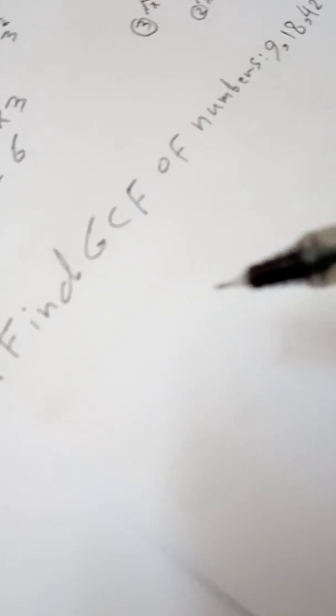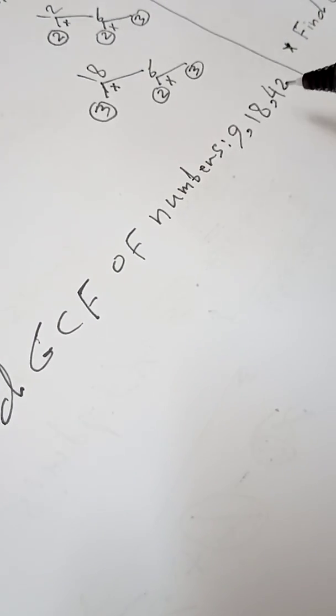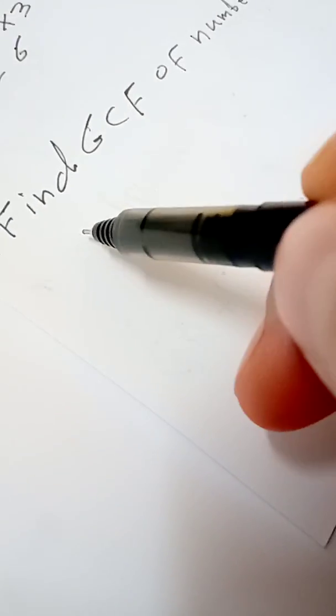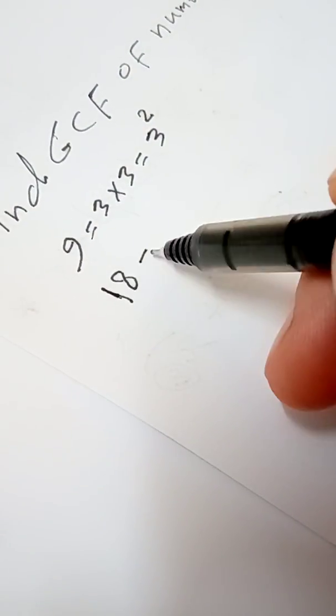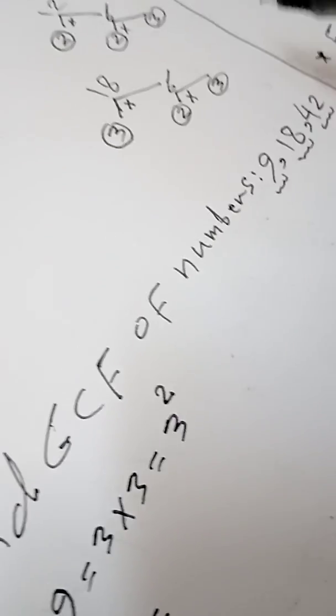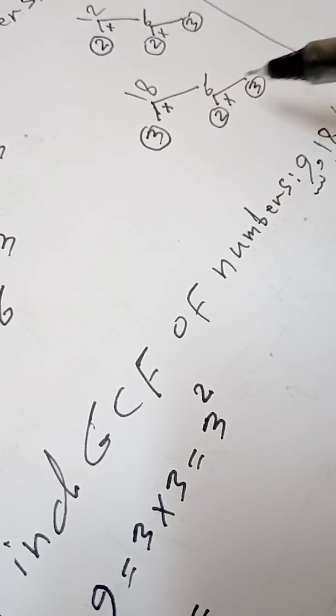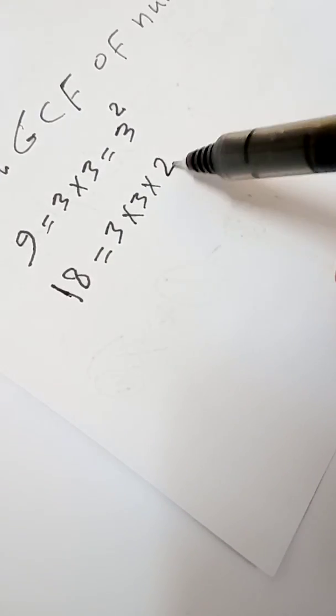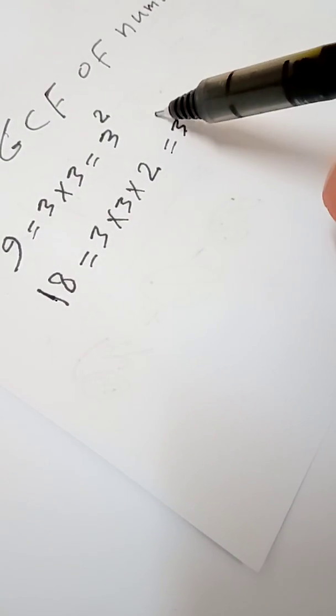Now find the GCF of numbers 9, 18, and 42. First step — write the prime factors. For 9: 9 equals 3 times 3, written as 3². For 18 — from the previous example — 18 equals 3 times 3 times 2, written as 3² times 2.